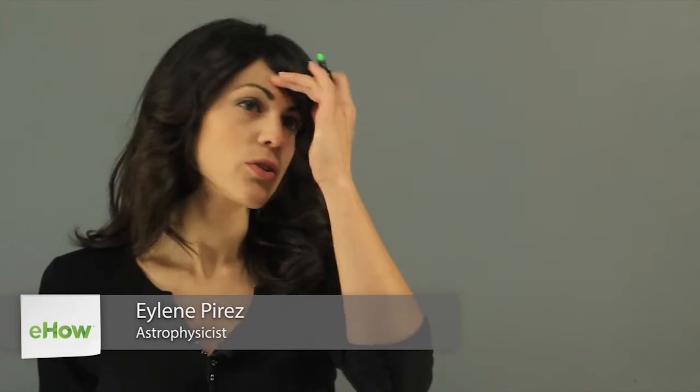Hi, my name is Eylene Pirez, and I'm an astrophysicist, and this is a list of 10 short facts about Neptune. So the first one is that it's the furthest one from the Sun, it's the eighth planet.